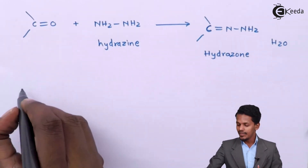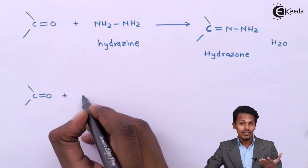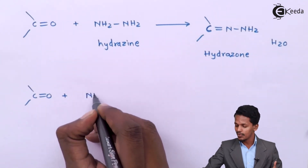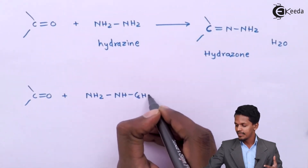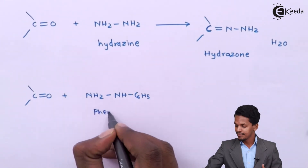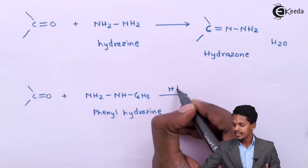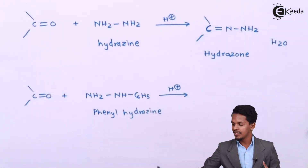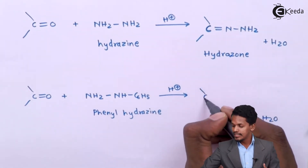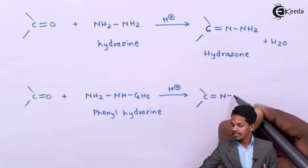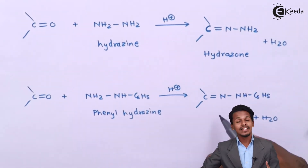Now let us consider another derivative of hydroxylamine: phenyl hydrazine, which is NH₂-NH-C₆H₅. Again the reaction proceeds in acidic conditions, and H₂O is obtained as a byproduct. The main product formed is C=N-NH-C₆H₅. This product is called phenyl hydrazone.